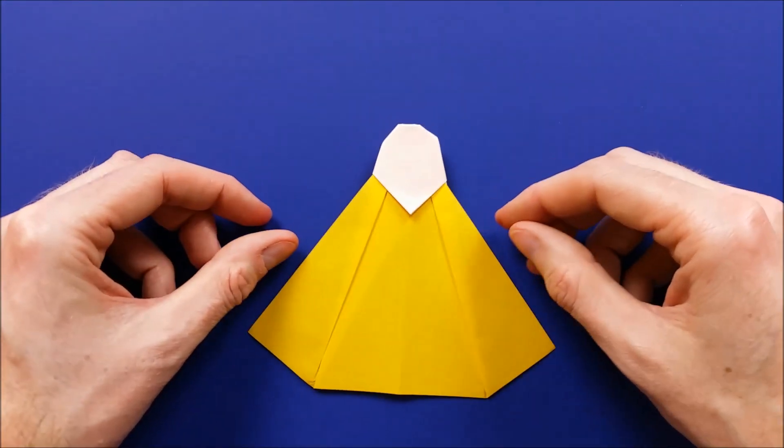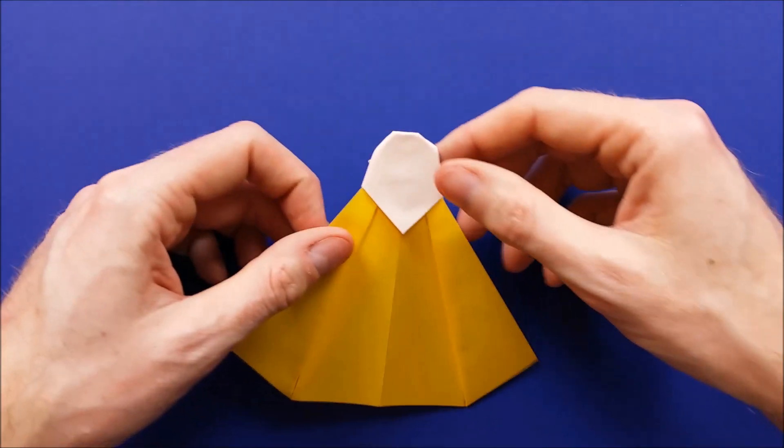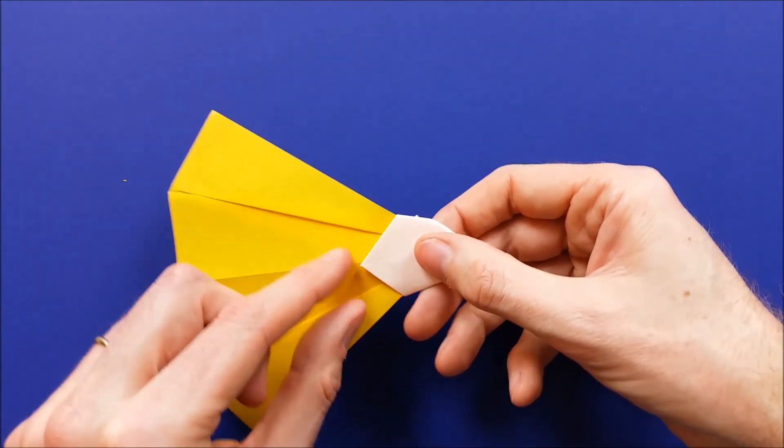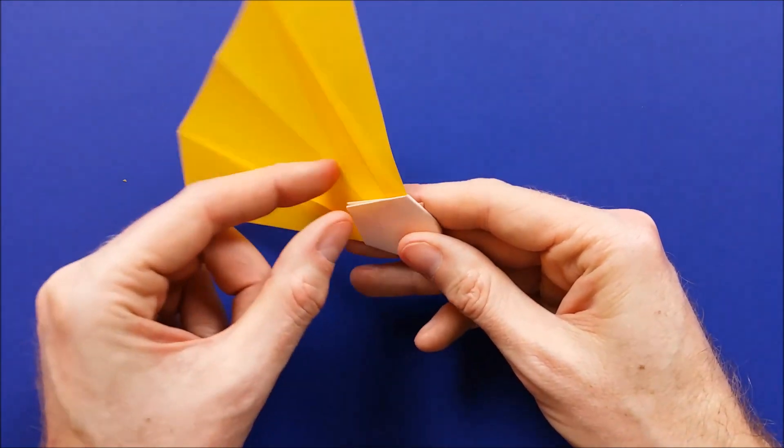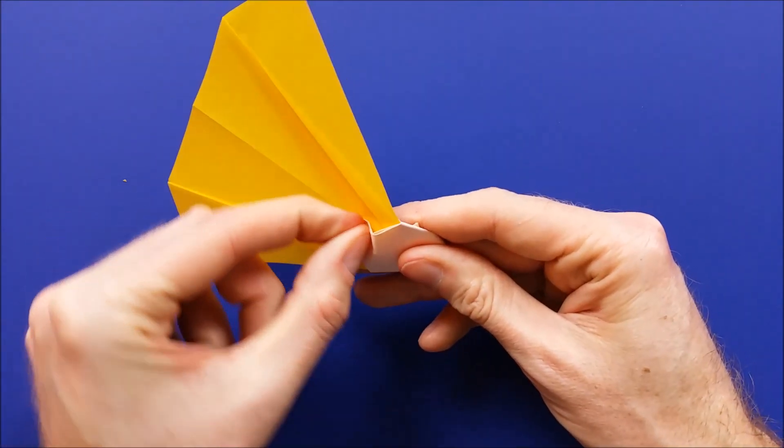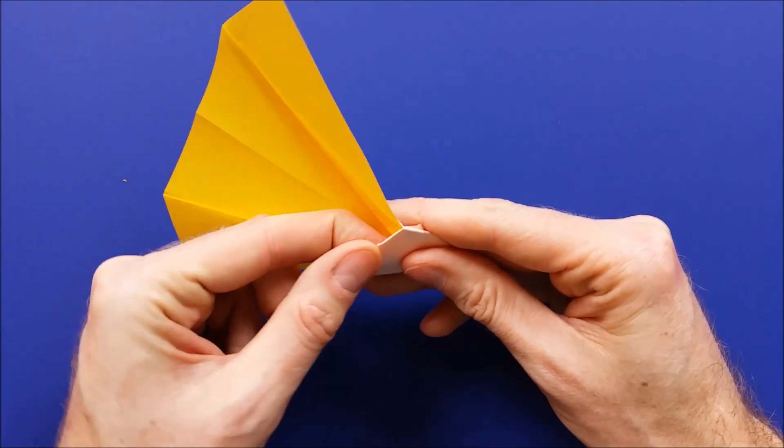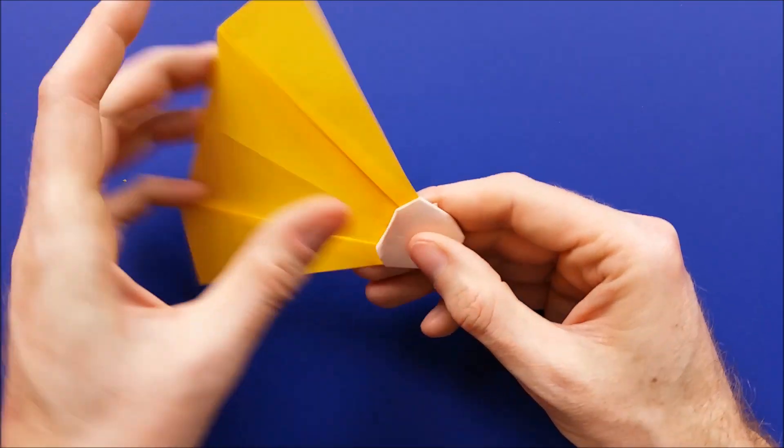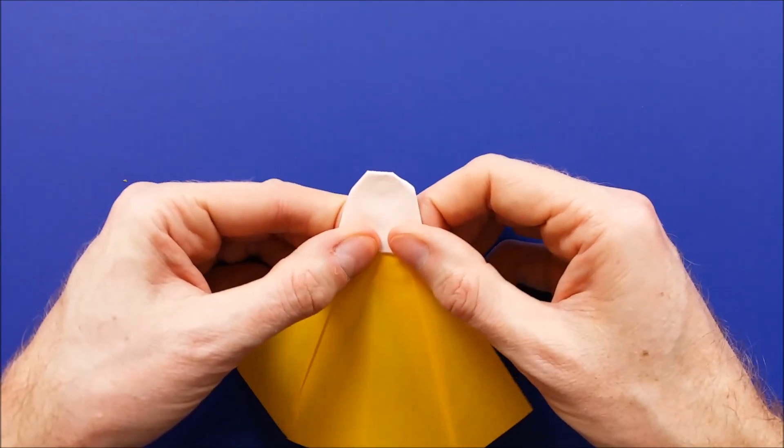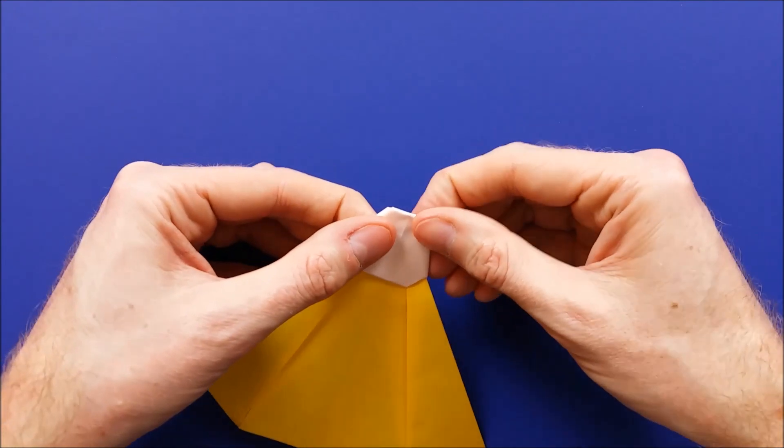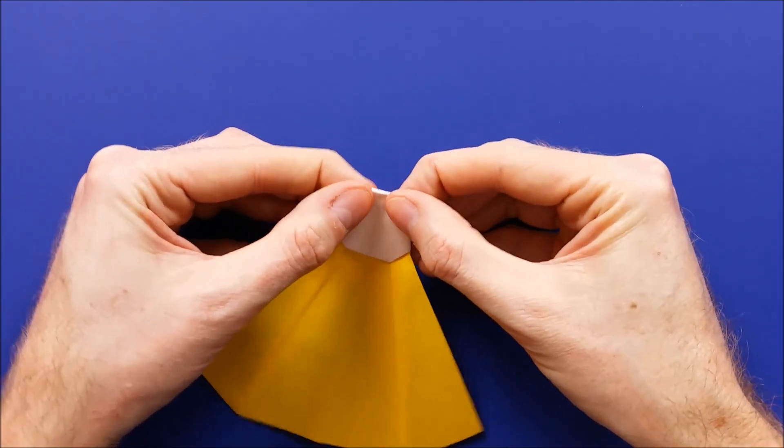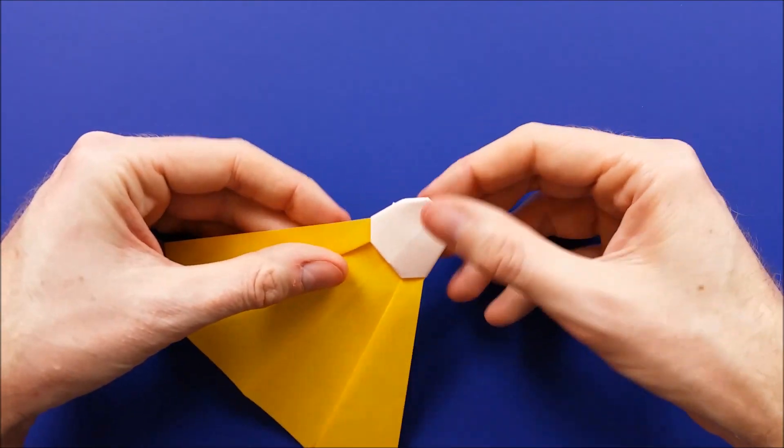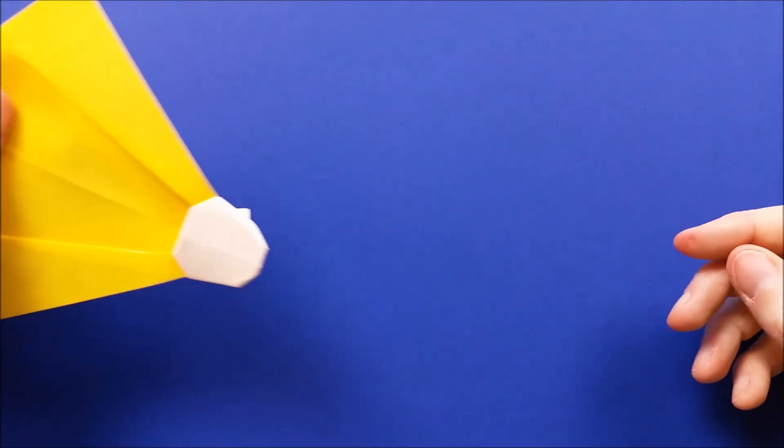And we are almost done. The only thing that we need to do now is to fold this inside. Like this. And your badminton shuttlecock is complete and ready to fly.